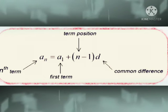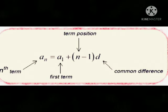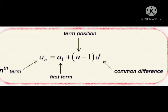Look at this. Nth term can be denoted either an or tn which is equal to a1 plus n minus 1 into d, where a1 is first term, d is common difference and n is term position.